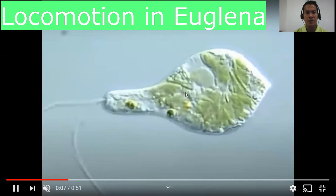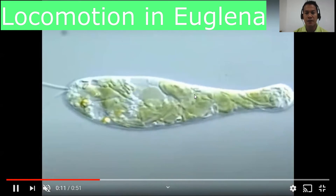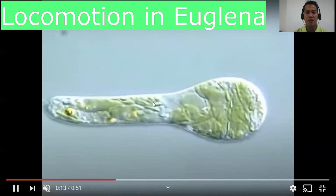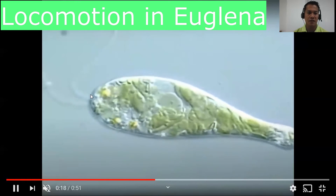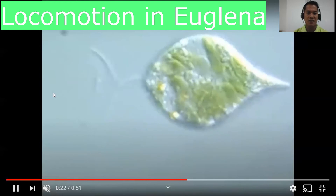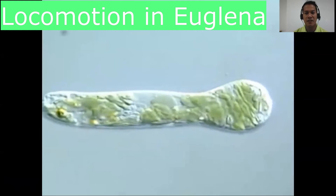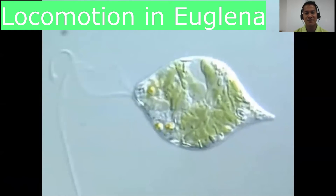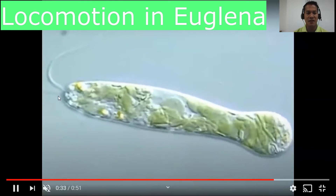I'll be showing you how Euglena utilizes its flagellum and cytoplasm movement for locomotion. Locomotion means movement. This is the Euglena, and as you can see there's movement in the cytoplasm and the movement of the flagellum. They move gracefully — really beautiful. Now you can see the movement of the flagellum right here.